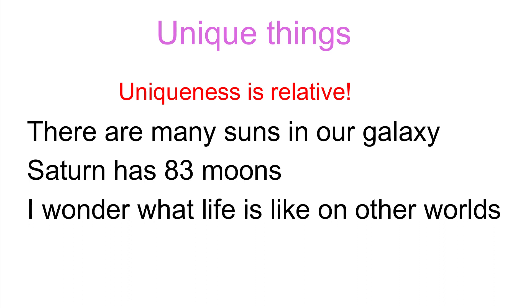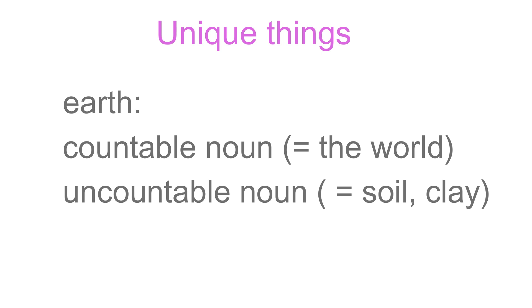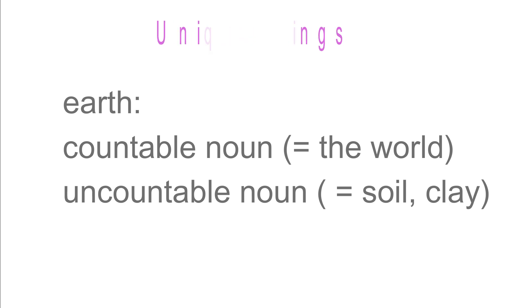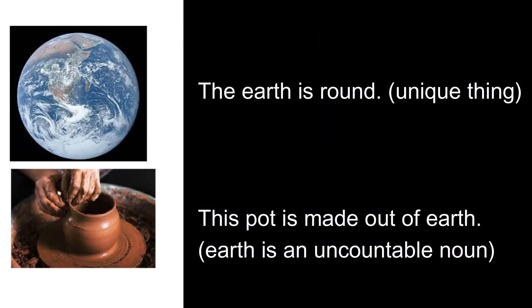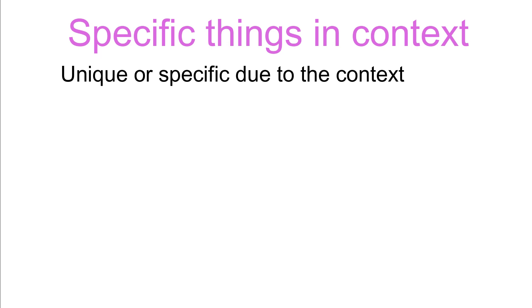We should also be mindful that when 'earth' is used without any determiner, it is used as an uncountable noun, similar in meaning to soil, dirt, or clay. 'The earth is round.' — unique thing. 'This pot is made out of earth.' — earth is an uncountable noun. Specific things in context. We should use 'the' when we are talking about a unique thing in context, even if it has not been mentioned before.